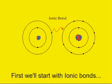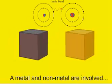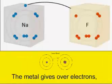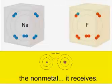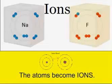First we'll start with ionic bonds. Metal and non-metal are involved. The metal gives over electrons, the non-metal it receives the energy of ions.